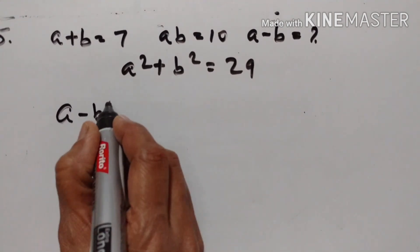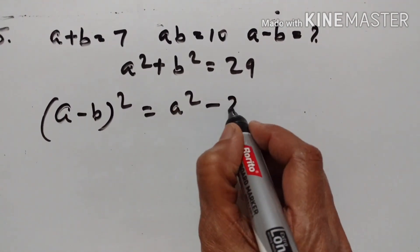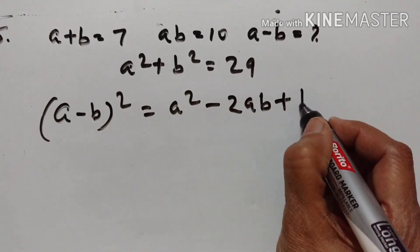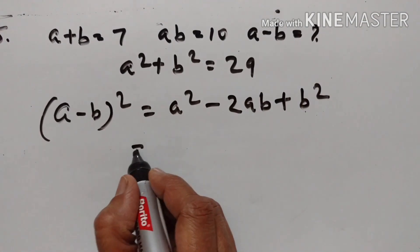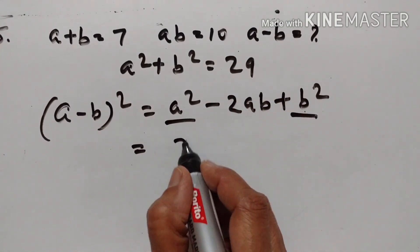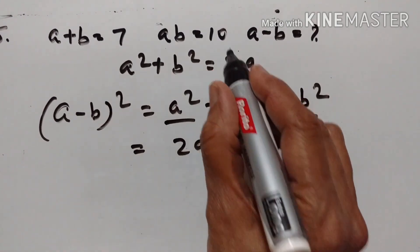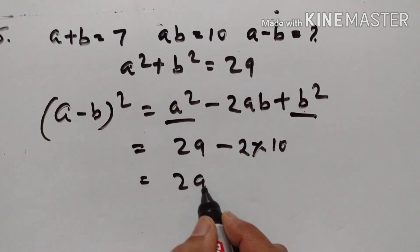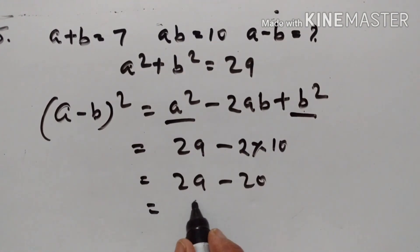Now, (A − B)² = A² − 2AB + B². We know A² + B² = 29, and AB = 10. So (A−B)² = 29 − 2 × 10 = 29 − 20 = 9.